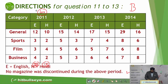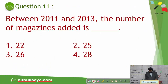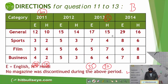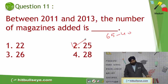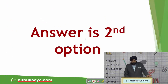Similarly in 2013: English 17, 7, 24, 5, 29 and 6 = 35; Hindi 15, 4, 19, 7, 26 and 4 = 30. So 35 plus 30 = 65. The question asks for the increase in number, so it's 65 minus 40 = 25. The second option is the answer — a very simple tabular question.